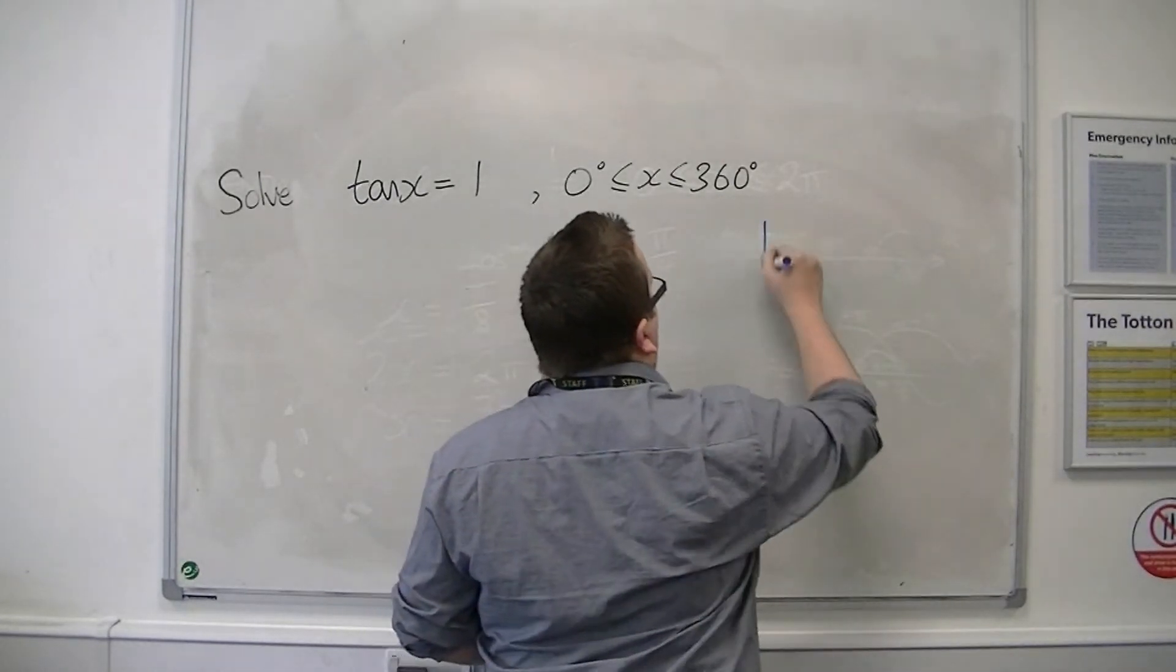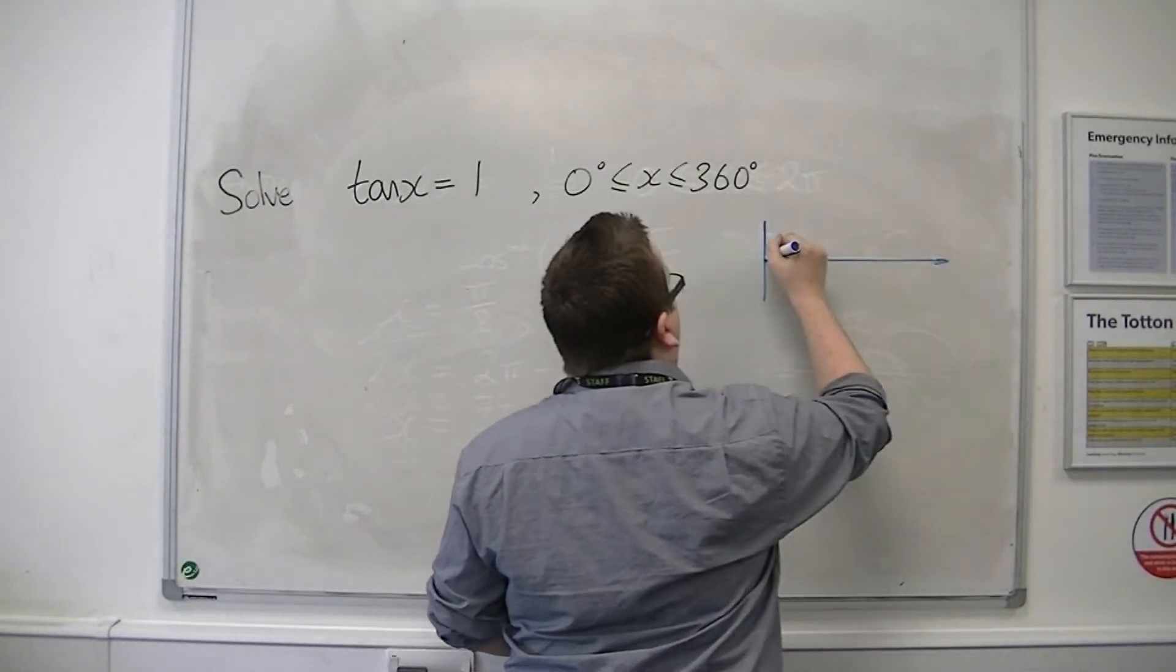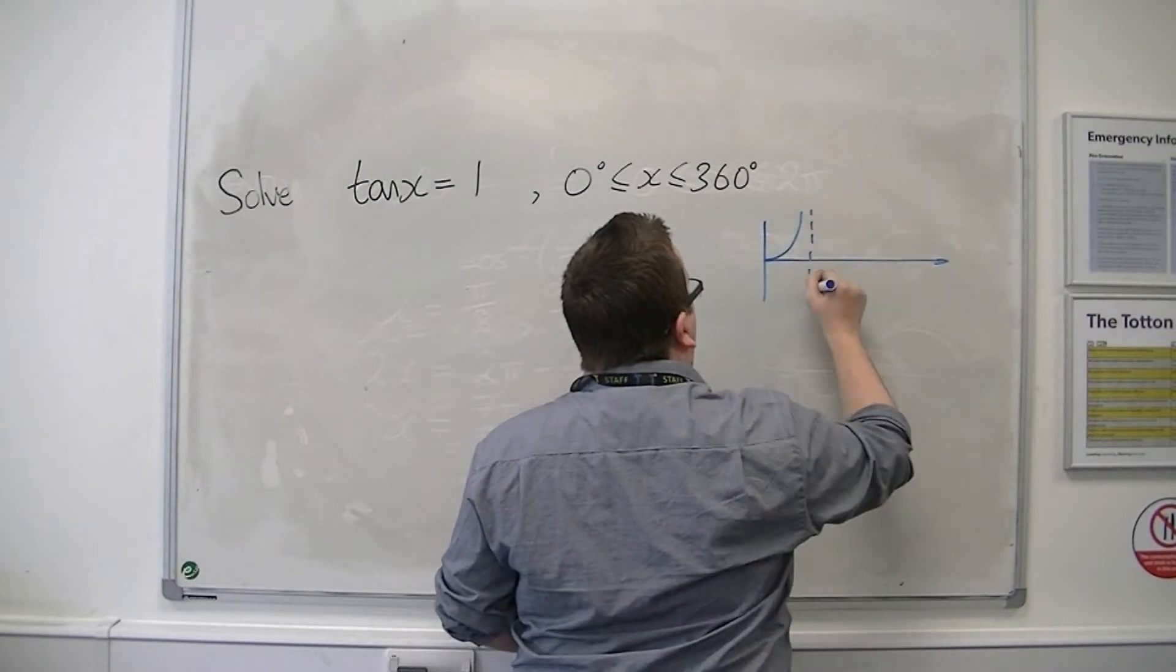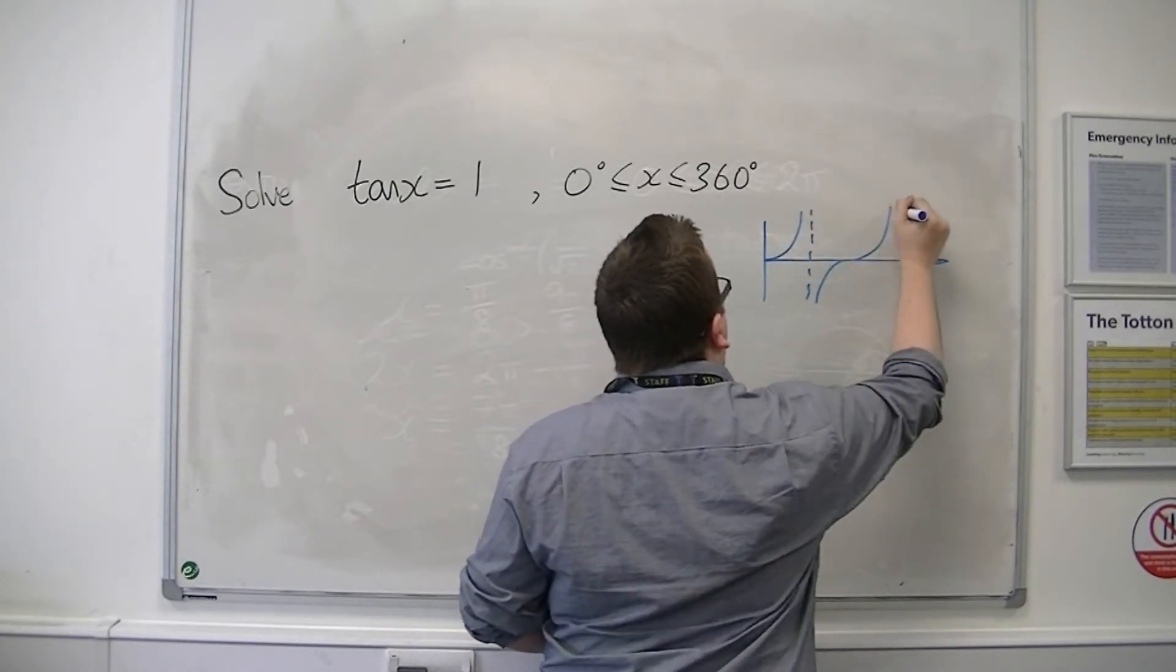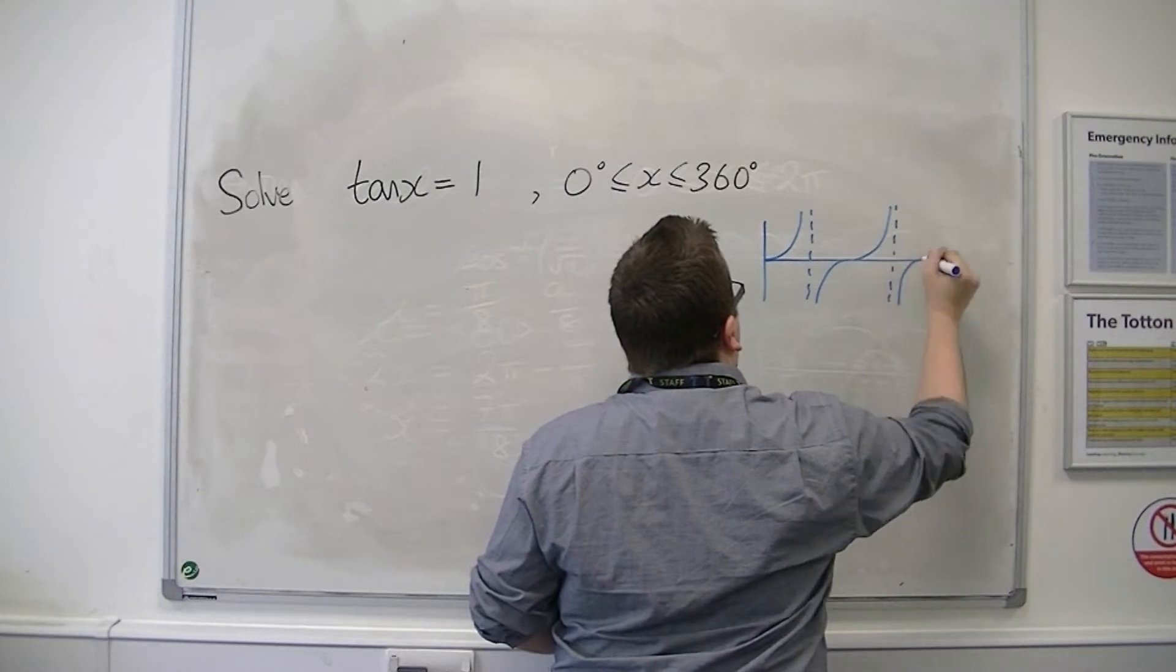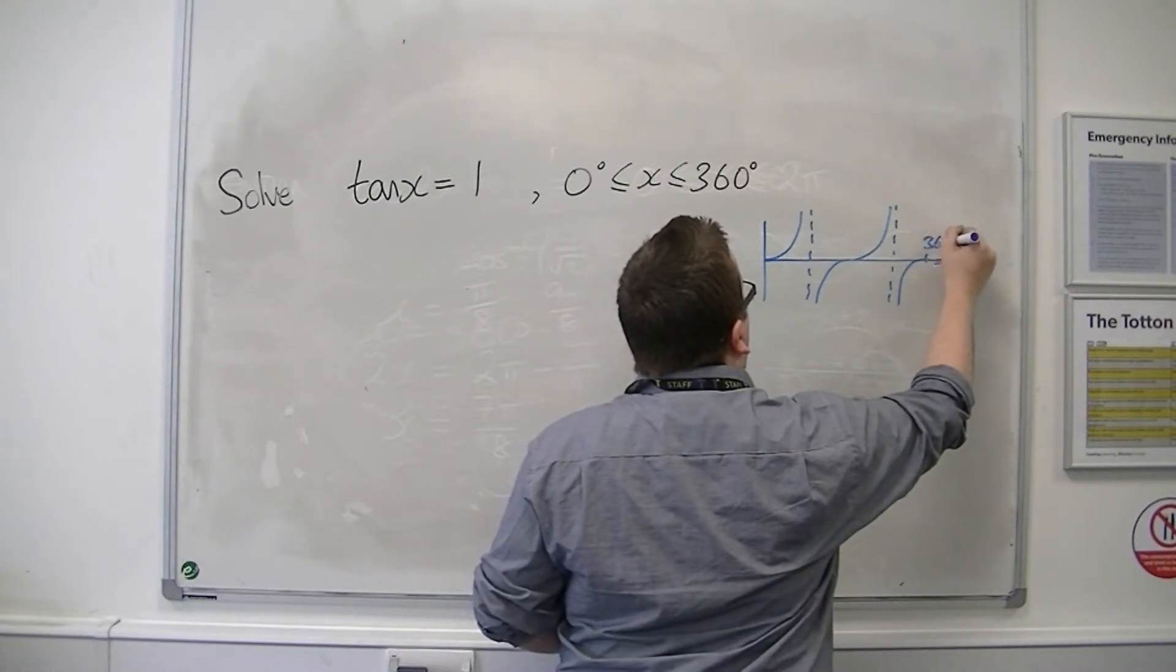So first of all, let's sketch tan. So tan looks something like this, between 0 and 360.